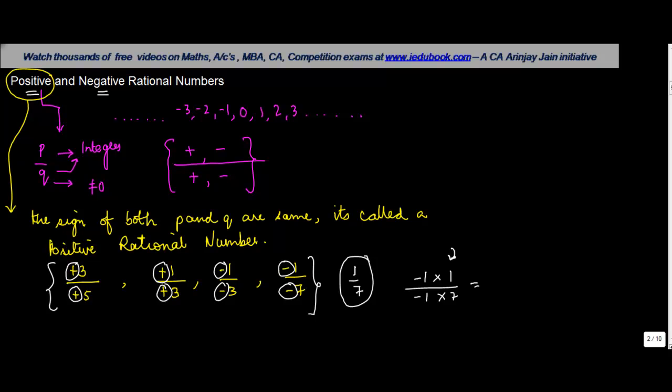We know the property of a fraction that if you divide it by the same number, it doesn't change the end result, both the numerator and the denominator. So if you divide by minus 1 on both sides, effectively the minus 1 will cancel out. So what you will be left with is 1 in the numerator and 7 in the denominator.